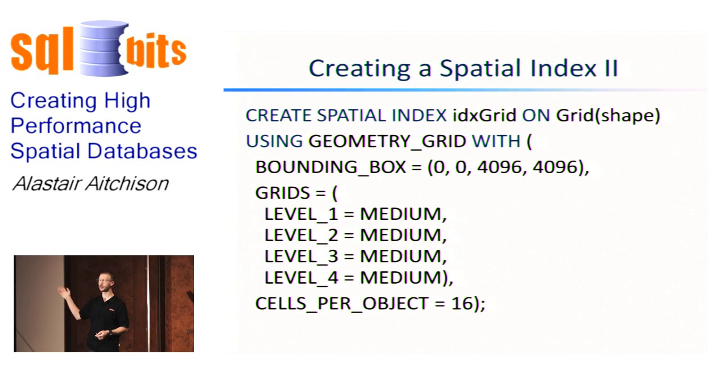Shape was a geometry column, so we're going to use the geometry grid for this example. If it had been a geography column, we'd use the geography grid instead. And then we look at the parameters of the index. The bounding box is the complete area of space that we're going to decompose into our grid. In this case, I'm starting at a point at 0,0, and I'm going up to a point at 4,096, 4,096. So this is essentially a square. Those values have been chosen for a reason, which you'll see in a second.